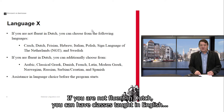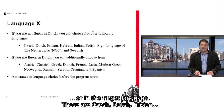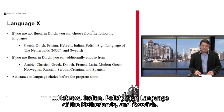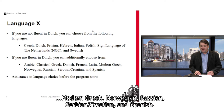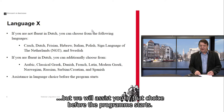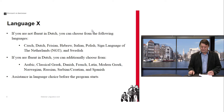You can choose from many different languages. If you're not fluent in Dutch, you can have classes taught in English or in the target language for several languages: Czech, Dutch, Frisian, Hebrew, Italian, Polish, Sign Language of the Netherlands, and Swedish. If you're fluent in Dutch, you have additional options — you can also choose Arabic, classical Greek, Danish, French, Latin, modern Greek, Norwegian, Russian, Slovenian, Croatian, and Spanish. We will assist you in that choice before the program starts.